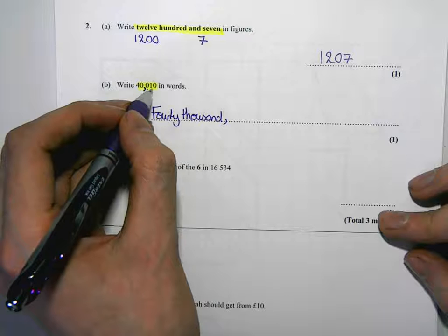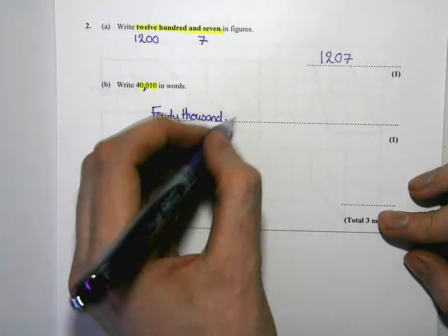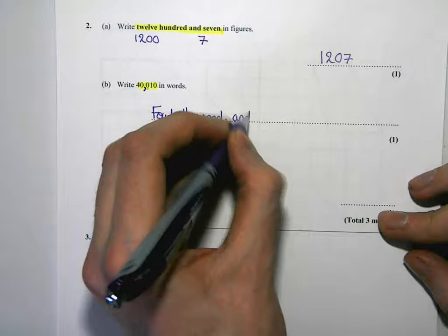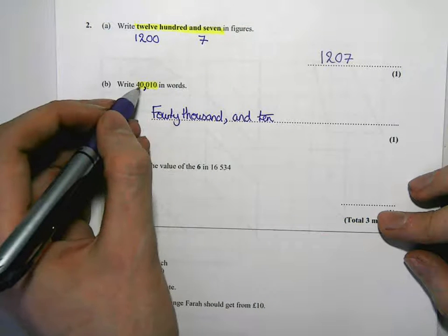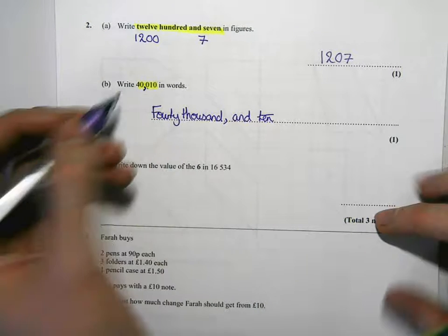There's no hundreds in this one and there's just ten as well, so it's forty thousand and ten. I always put a comma every three because I think that helps separate it to read it.